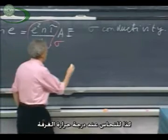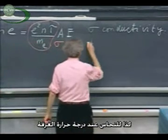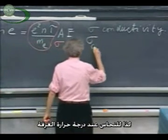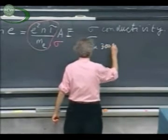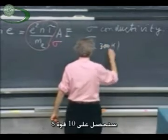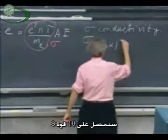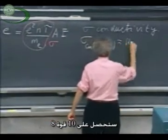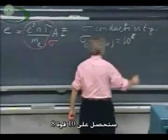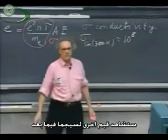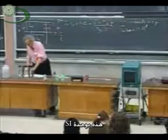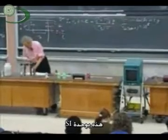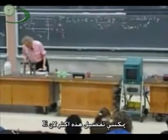So for copper at room temperature, you'll find about ten to the eighth. You'll see more values for sigma later on during this course. This is in SI units.